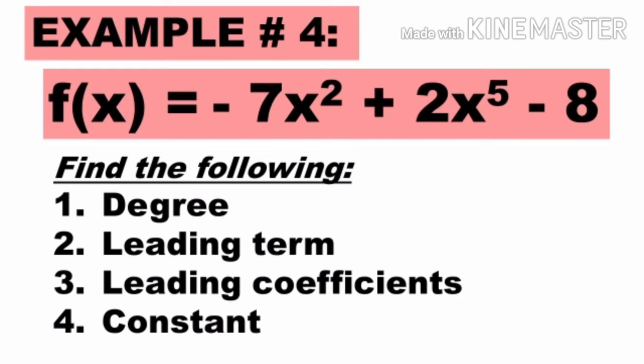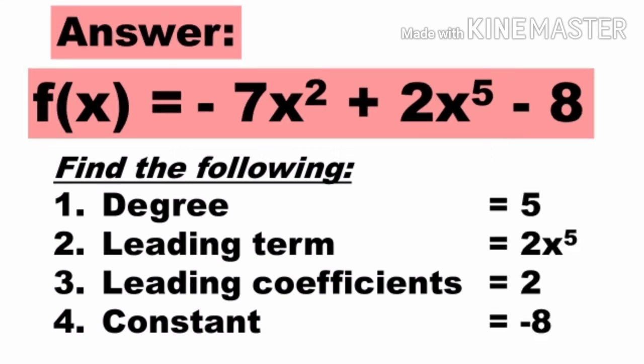Example number 4: f(x) = -7x² + 2x⁵ - 8. Again, hindi sya nakaayos sa standard form. To find the degree, pipiliin lang natin kung alin sa mga terms yan ang may pinakamataas na exponent, and that is 5. So the degree is 5. The leading term — yung term na may pinakamataas na exponent — is 2x⁵. The leading coefficient — yung coefficient ng leading term — is 2. And the constant term — yung walang kasamang variable — is negative 8.